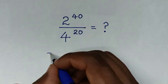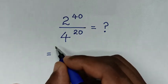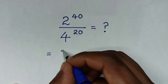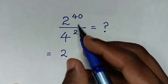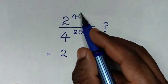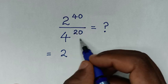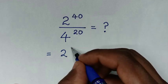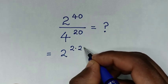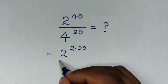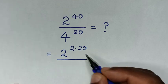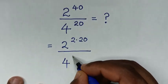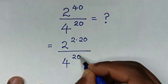So it will be equal to: from the numerator 2 power of 40, we write 2, then power of 40, to have a common power of 20. 40 is the same as 2 times 20, then over this exponent 4 power of 20.